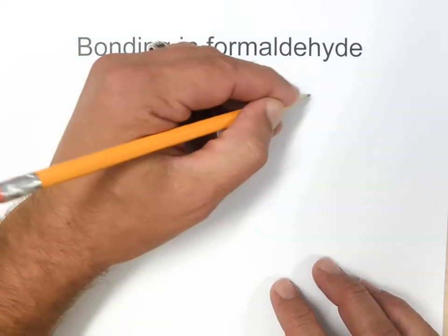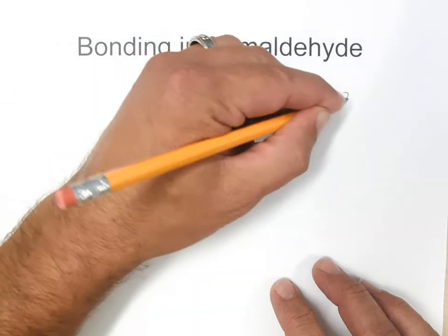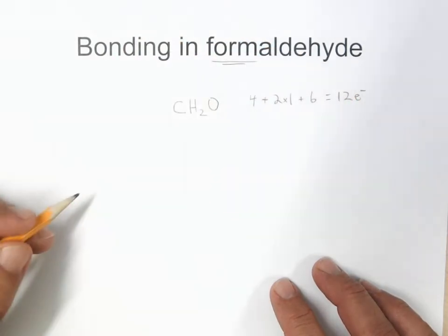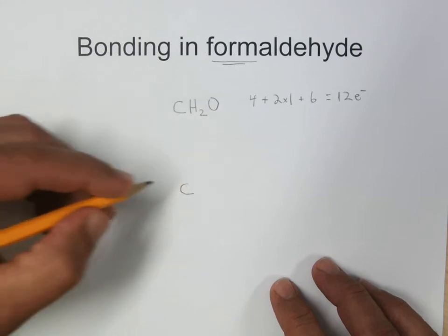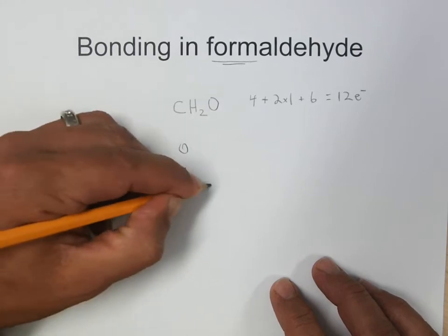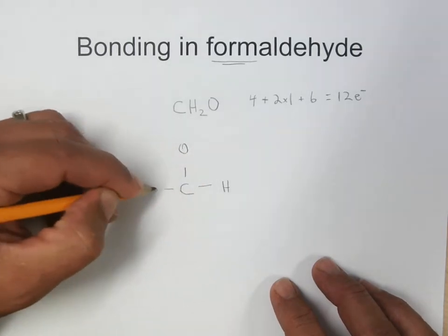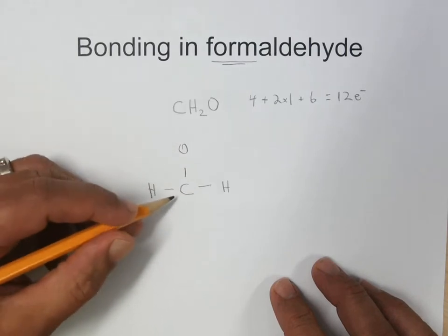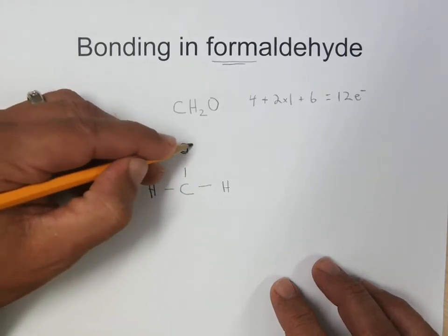and then six for the oxygen, gives us twelve electrons for the formaldehyde. The carbon is in the center, and it's attached to the oxygen and the two hydrogens. We can fill the octet on the non-central oxygen.